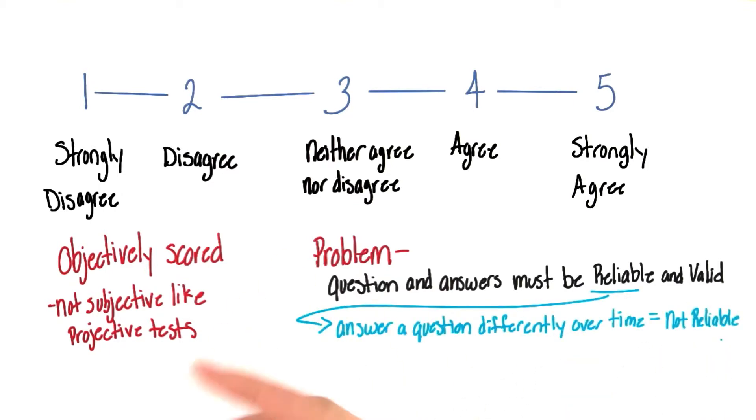If people answer questions one way at one point in time, but differently, say a month later, then we don't have a reliable questionnaire.